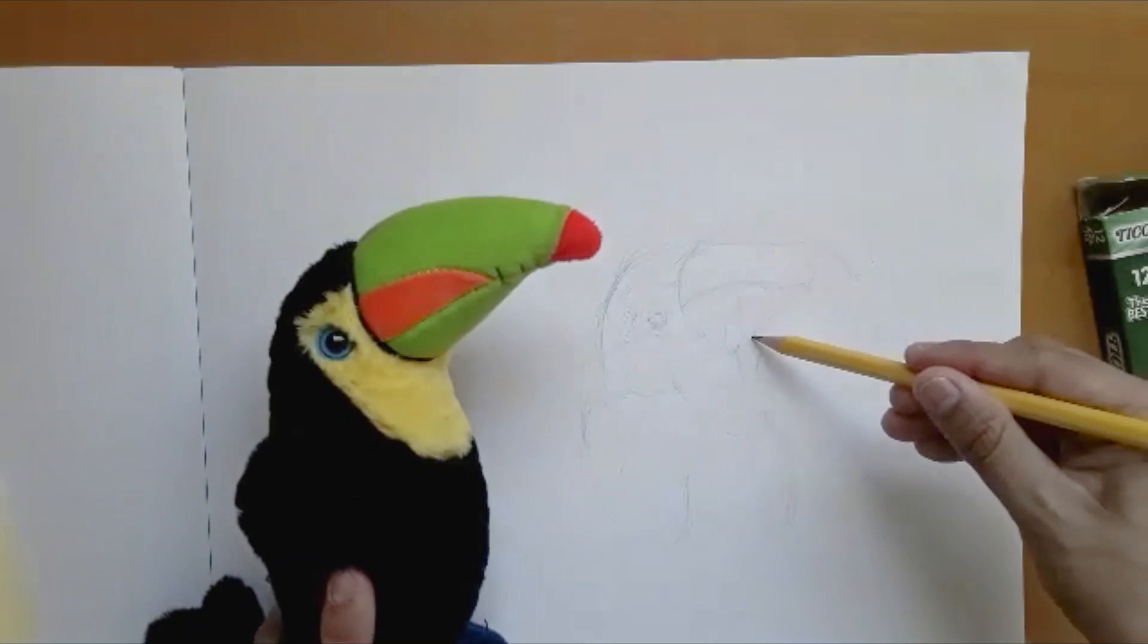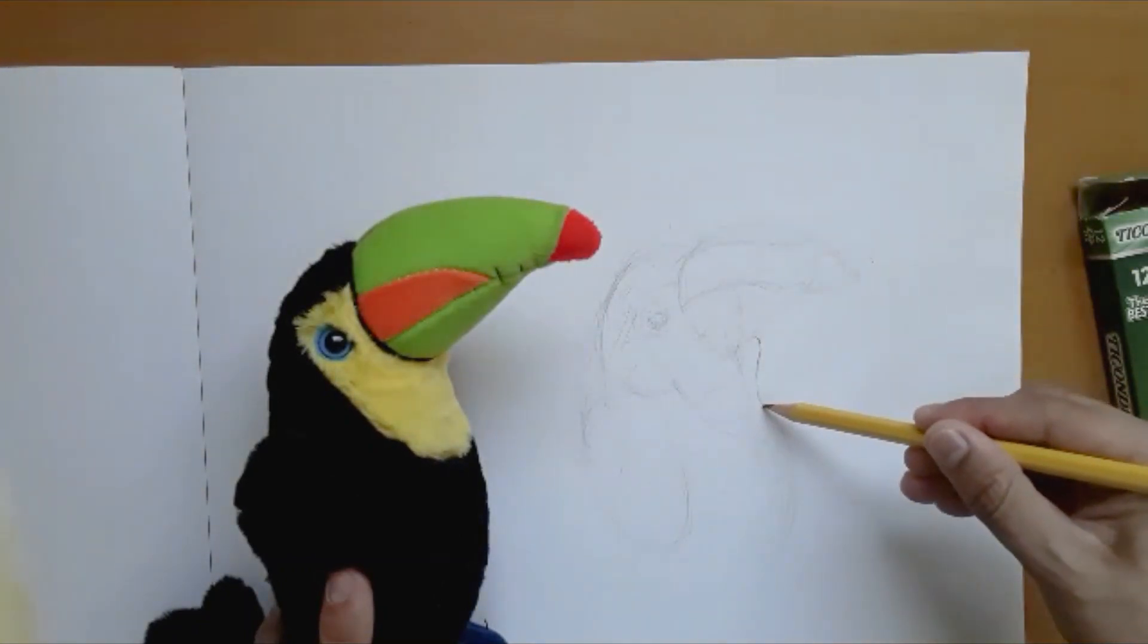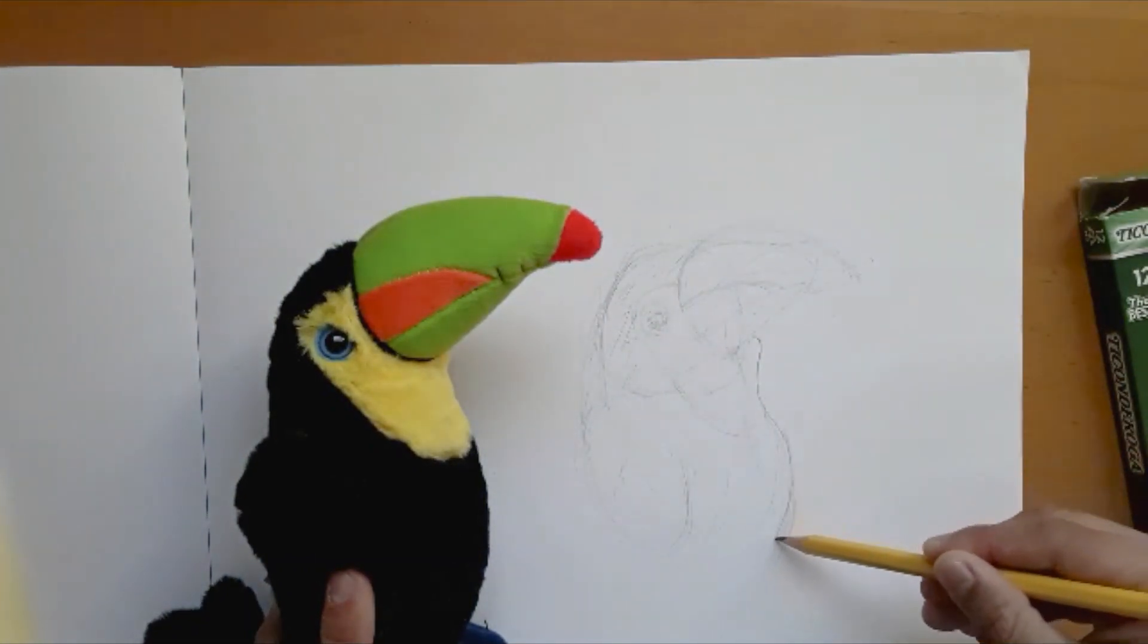After sharpening your pencil, attempt to fill in details for your object. Don't feel pressured to darken your lines so soon. Go at a calm pace.